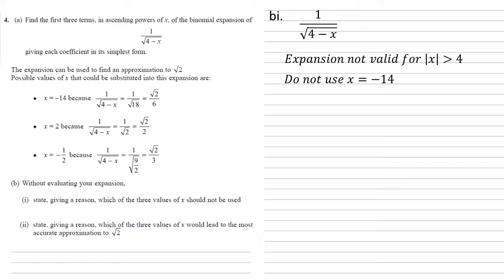Now for part 2, state again giving a reason which of the three values of x would lead to the most accurate approximation to root 2. So we have a binomial expansion. The closer to zero our value of x that we put into it is, the more accurate the approximation is going to be. Out of the values we've got there, the one that's closest to zero is minus a half, so that's the one that's going to give us the most accurate approximation.